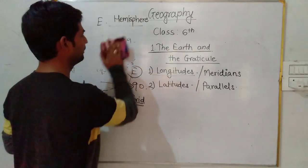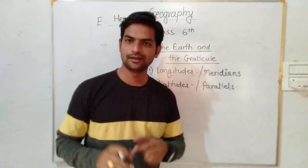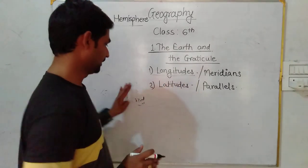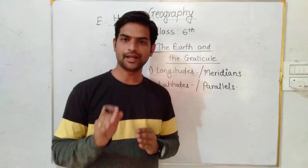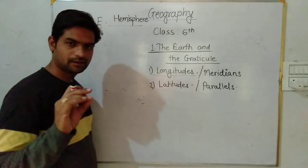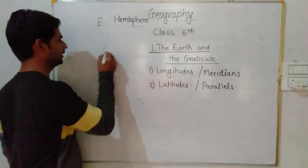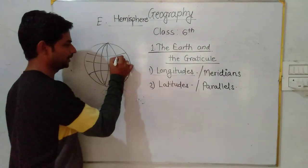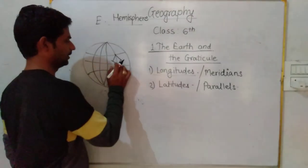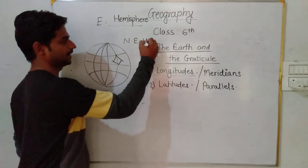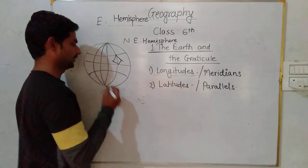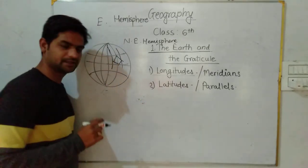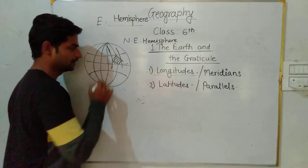We will get information about the importance of lines of latitudes and longitudes. Lines of latitudes are called parallels and lines of longitudes are called meridians. What is the importance of parallels and meridians? For example, we know India's location — India is located in the North Eastern Hemisphere. India's longitudes and parallels are important. India lies between these latitudes and longitudes.